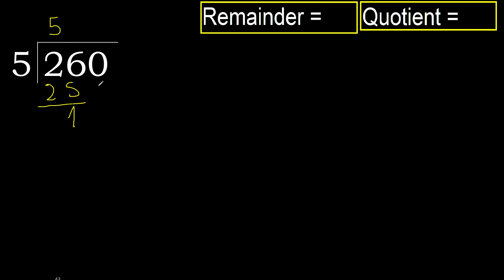Subtract, next. Bring down 10. 5 multiplied by 3 is 15, which is greater. 5 multiplied by 2 is 10, which is not greater.